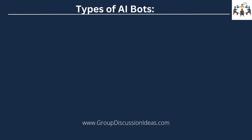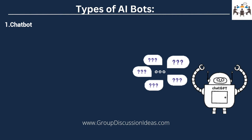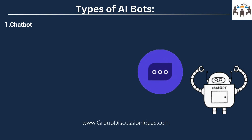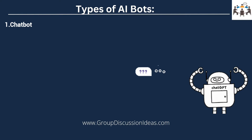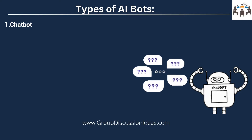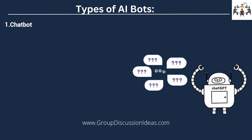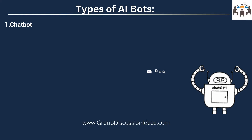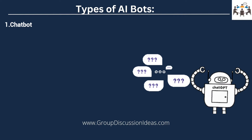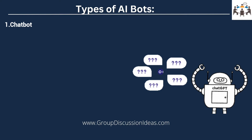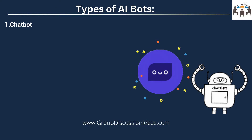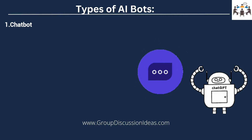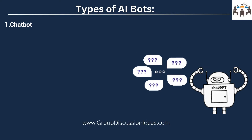Let us see the types of AI bots. First is chatbot. Chatbots specialize in text or spoken conversations. They are task-specific programs designed for a specific purpose like providing customer service, answering FAQs, or guiding users through a website or app.